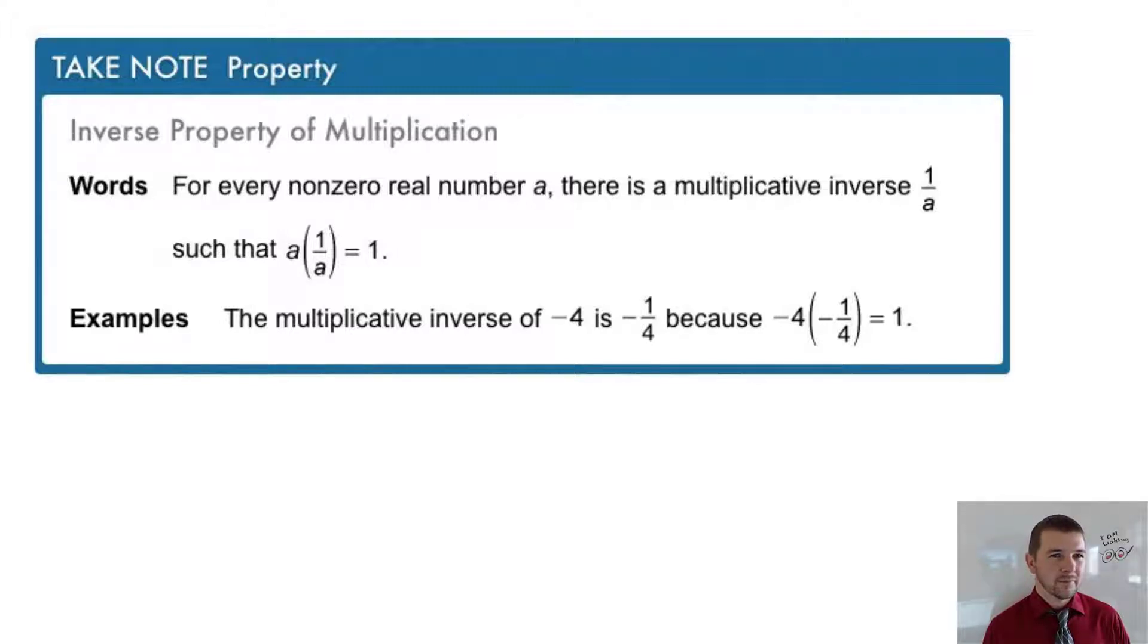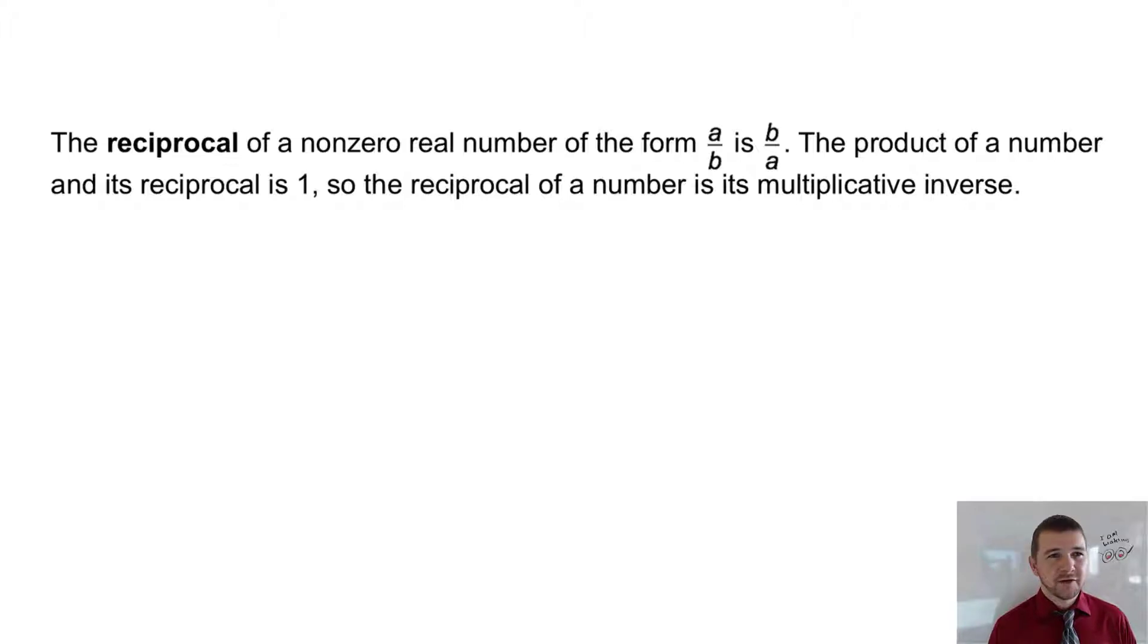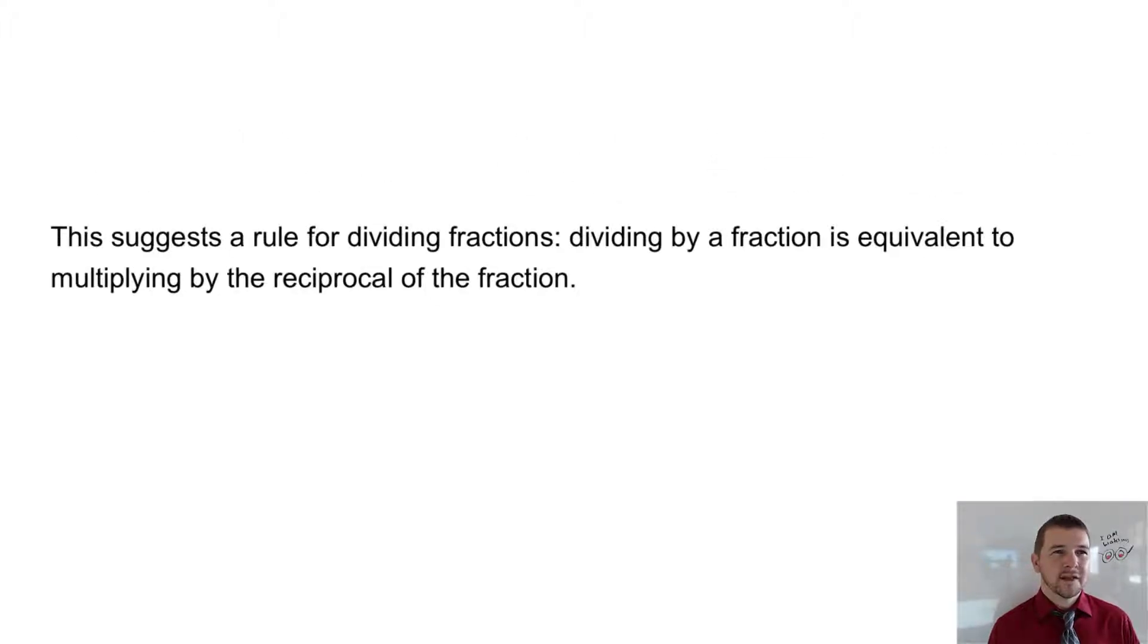That's because -4 times -1/4 equals 1. The reciprocal of a non-zero real number in the form a/b is b/a. The product of a number and its reciprocal is 1, so the reciprocal of a number is its multiplicative inverse. This suggests a rule for dividing fractions: dividing a fraction is equivalent to multiplying by the reciprocal of the fraction.